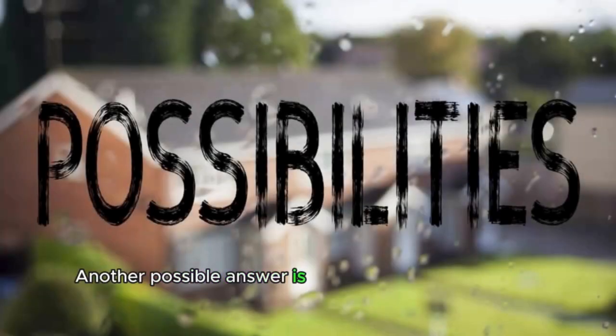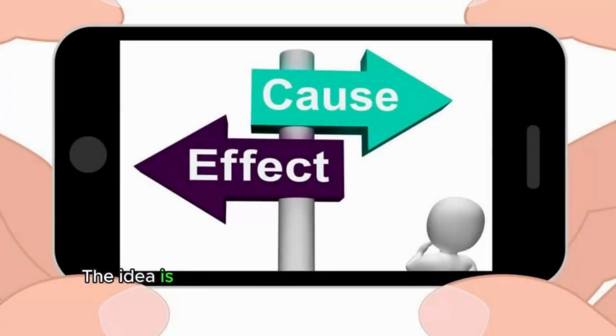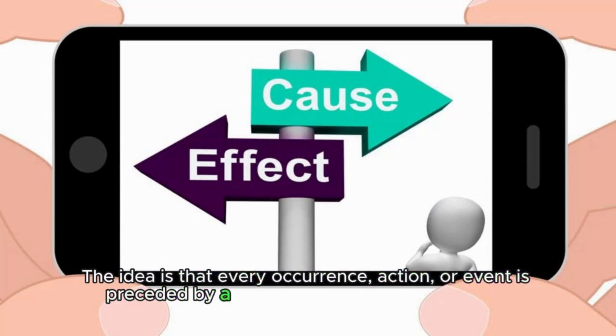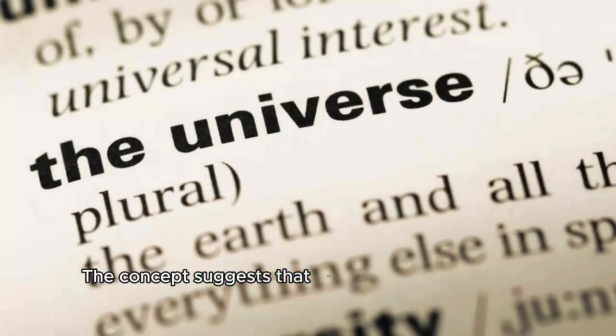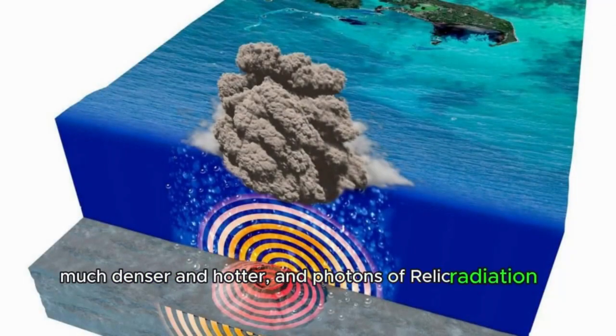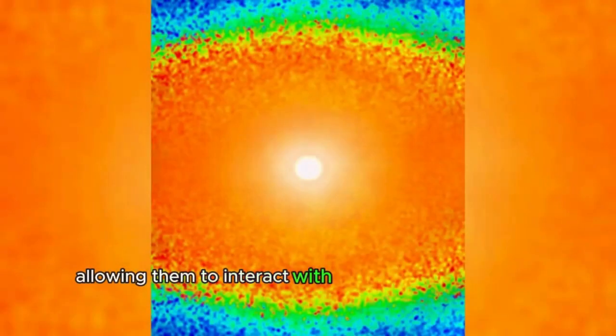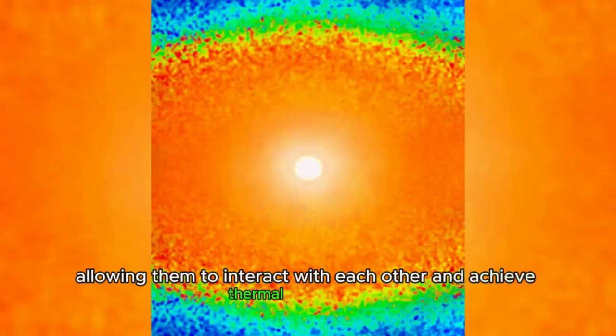Inflation models also explain the homogeneity and isotropy of the universe, addressing other major observational mysteries in cosmology. Another possible answer is the concept of causality, a fundamental principle in the sciences. The idea is that every occurrence, action, or event is preceded by a cause that determines its effect. The concept suggests that the early universe was much denser and hotter, and photons of relic radiation in this state were in causal contact, allowing them to interact with each other and achieve thermal equilibrium.